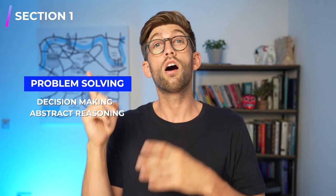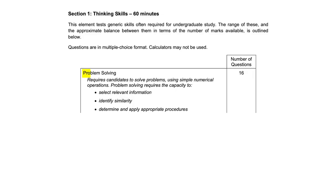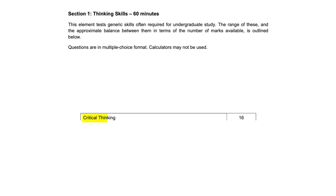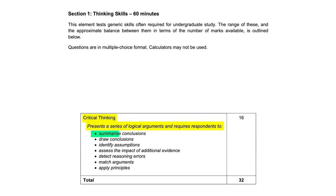If you've sat the UCAT, problem solving is a bit like the decision making or abstract reasoning of the UCAT, whereas critical thinking is more like the verbal reasoning. Problem solving requires candidates to solve problems using simple numerical operations, select relevant information, identify similarities, and determine and apply appropriate procedures. Critical thinking presents logical arguments and requires respondents to summarise conclusions, draw conclusions, identify assumptions, assess the impact of additional evidence, detect reasoning errors, match arguments and apply principles.